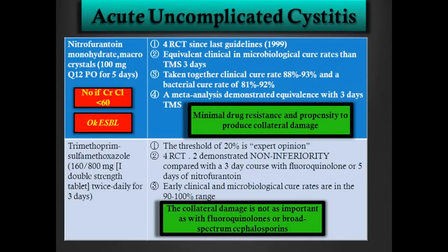Drug resistance to nitrofurantoin in the community is minimal, and the propensity to produce collateral damage almost doesn't exist. It's an optimal drug to treat cystitis in outpatients and in ERs. The resistance testing at UofL in outpatient urine cultures is only 1%, so resistance to nitrofurantoin is really very low. There is a contraindication: patients with renal failure and creatinine clearance less than 60 — we should not use nitrofurantoin.